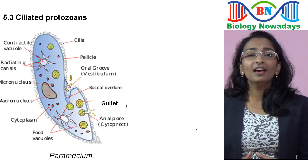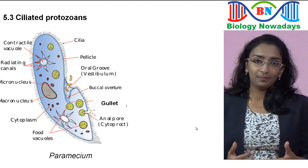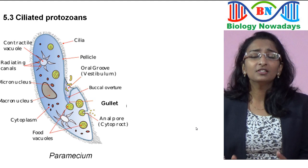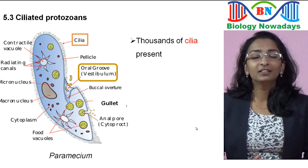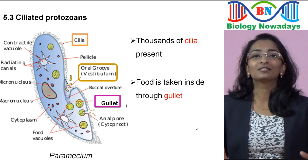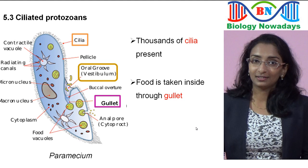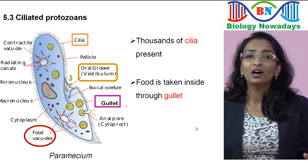Coming to ciliated protozoans — they have a characteristic shape. For example, Paramecium, shown here, is slipper-shaped. These protozoans are all aquatic. They have thousands of hair-like structures called cilia all over their body, which help in movement. They have an oral groove that leads into a cavity called the gullet. The movement of cilia causes water with food particles to enter through the oral pore and reach the gullet. Food is digested in the food vacuole and waste is thrown out through the anal pore.